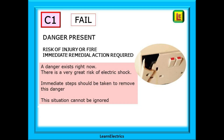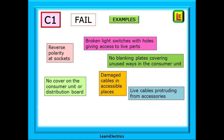Let's look at some of these codes. A C1 is an automatic fail and will make the installation unsatisfactory. Danger is present — there is a risk of injury or of fire and immediate remedial action is required. In other words, a danger exists right now. There is a very great risk of electric shock and steps need to be taken to remove the danger right now. It might be as simple as disconnecting the circuit. This situation cannot be ignored. On this page we've shown some of the things that may trigger a C1 observation.